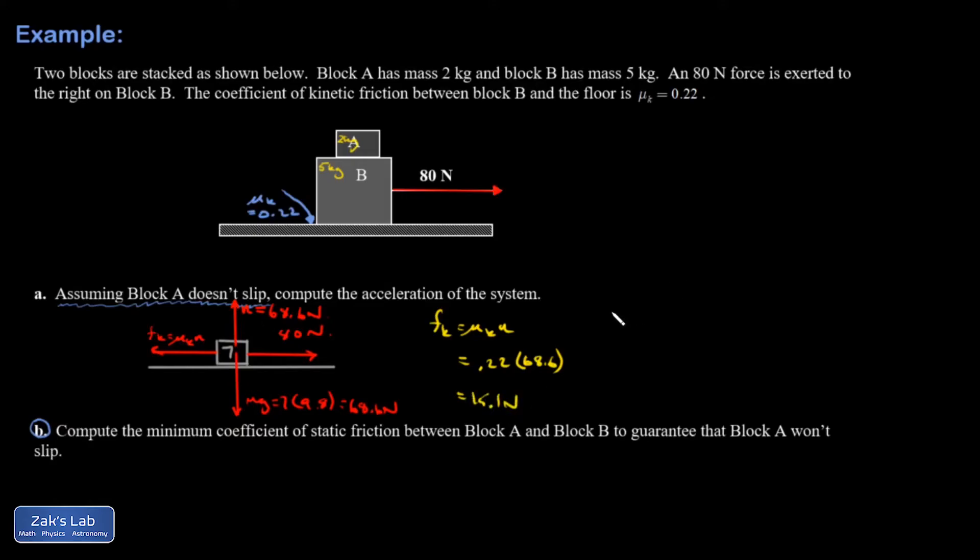Now I'm ready to use Newton's second law. f net equals ma. So positive direction, I have 80 newtons applied. Negative direction, that was the friction force, 15.1. That's equal to 7 times the acceleration. And I can solve quickly for a. 80 minus 15.1, divide that result by 7. And a is 9.27 meters per second squared.